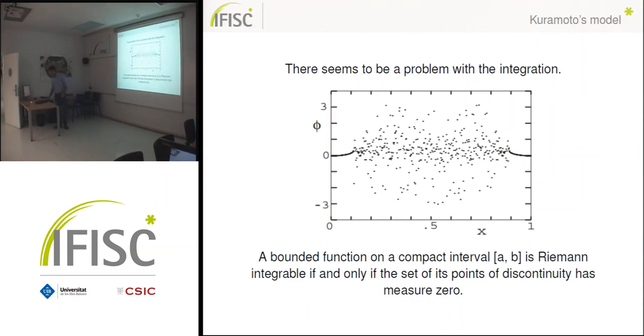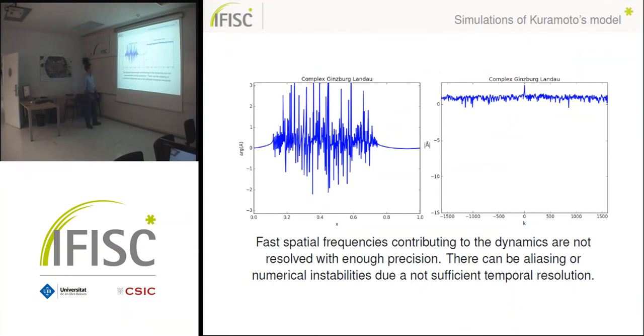So to check that, we made our own simulations to reproduce the result. And we found when we checked the Fourier transform in logarithmic scale that the higher frequencies of the spatial dynamics are not well resolved. Meaning that we should have here that the faster spatial frequencies come down to here to be sure that they are being solved with the resolution with good accuracy. And there can be either aliasing due to not being solved in the faster frequencies or a numerical instability due to not sufficient temporal resolution.